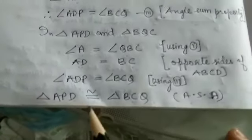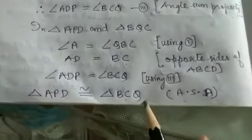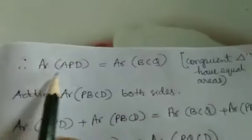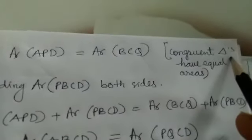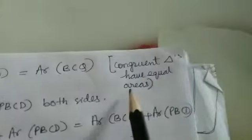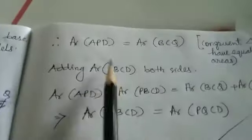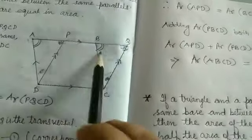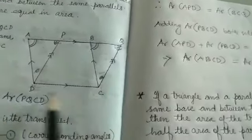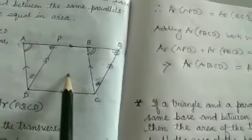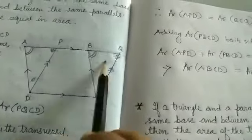When two triangles are congruent, their areas are equal. Therefore, area of triangle APD equals area of triangle BCQ — congruent triangles have equal area. Now these two triangles' areas are equal, and this part PBCD is left out.